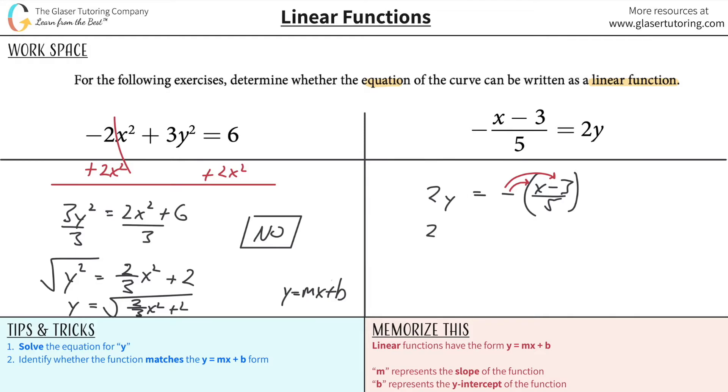So this would be equal to then 2y equals negative x plus 3 all over 5. Now I like that a little better, because there's no negative hanging outside. Now what I'm going to do is take this denominator term and basically distribute it to each of the numerator terms, okay?